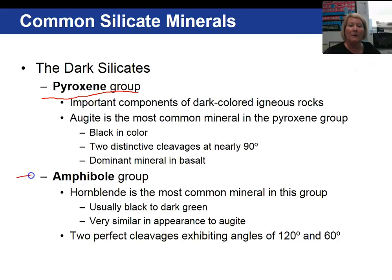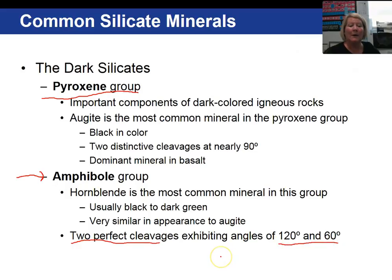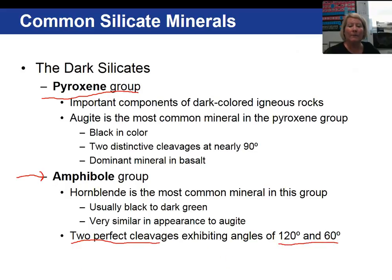Another common dark silicate are the amphiboles. Hornblende is the most common variety of amphibole — black in color, very similar to augite — but you can distinguish between their cleavage directions. Augite has cleavage at 90 degrees in two directions, and amphibole has two directions as well but not at 90 degrees — at 120 and 60 degrees. Here's a picture of augite, the pyroxene, and hornblende, an amphibole.